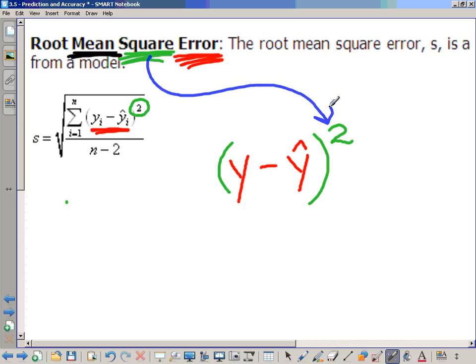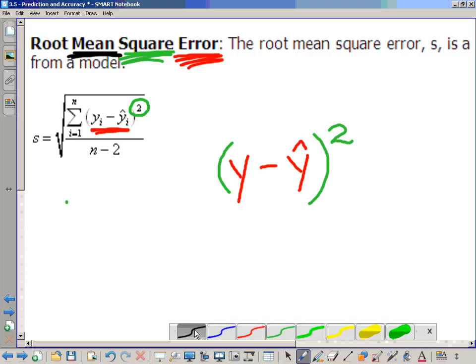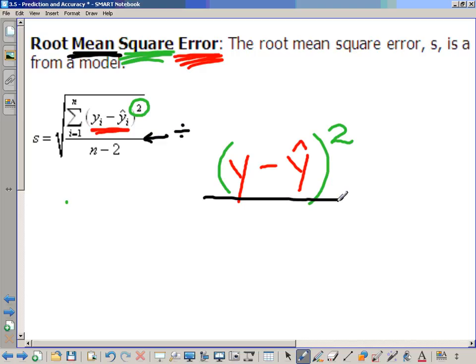And here we are with the word mean. The mean is typically found by adding things up and dividing by how many there are. Do you see dividing in this formula? It's pretty clear that dividing is right here. That's a division bar. So dividing is in the problem, and you divide by n minus 2.